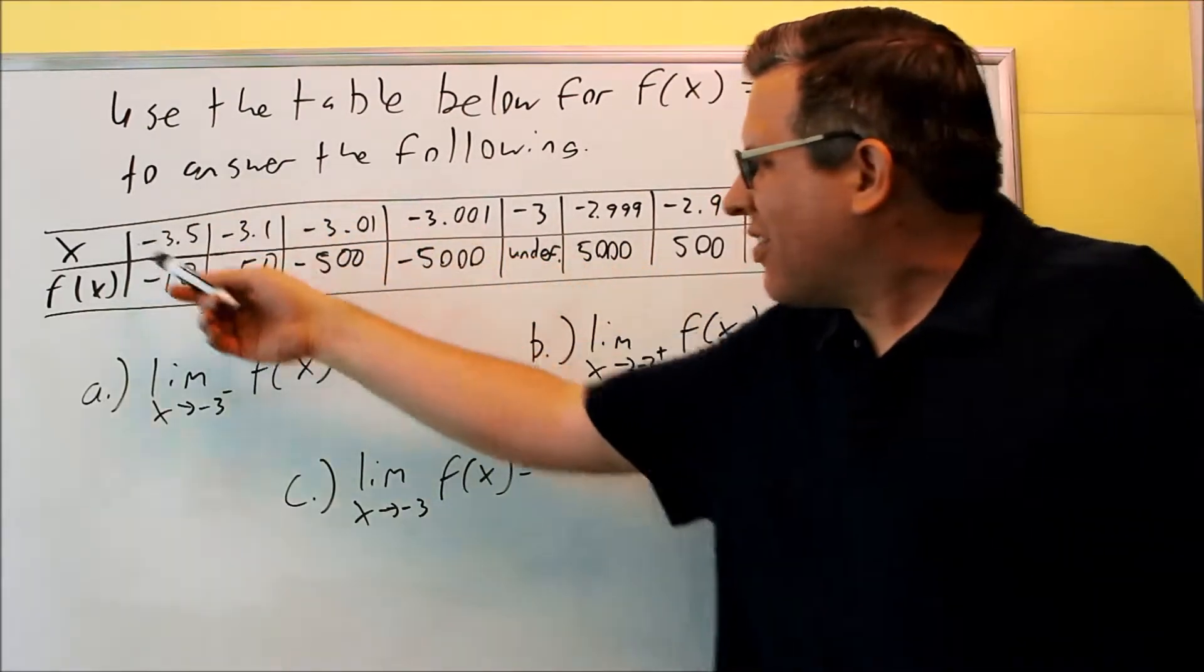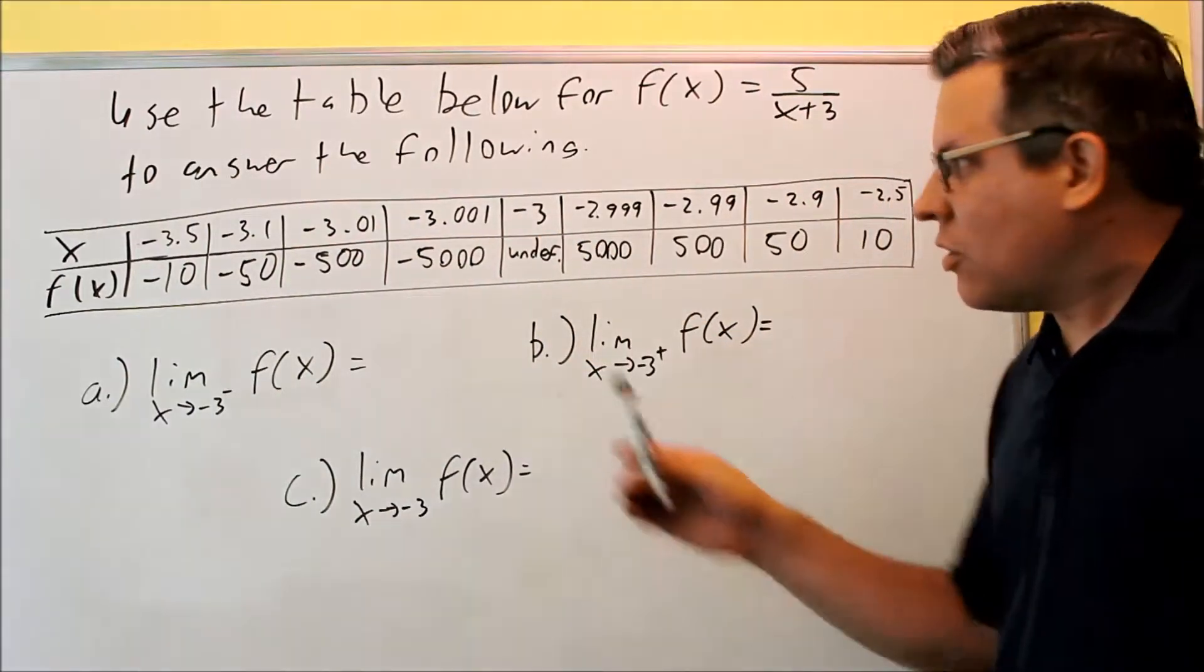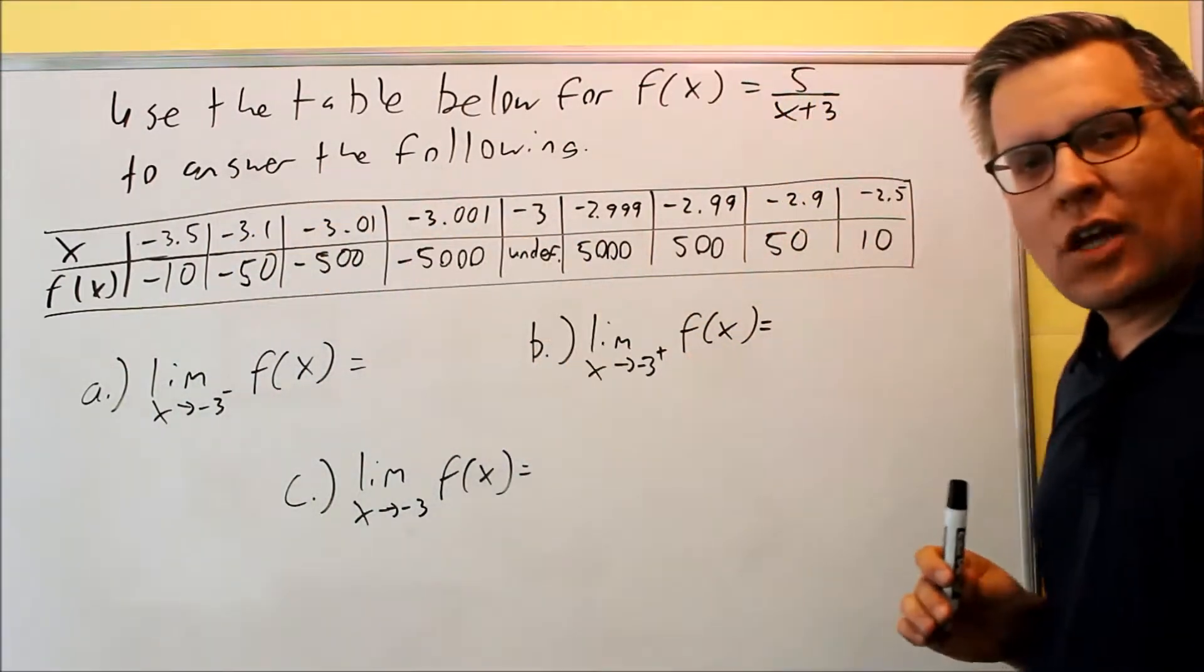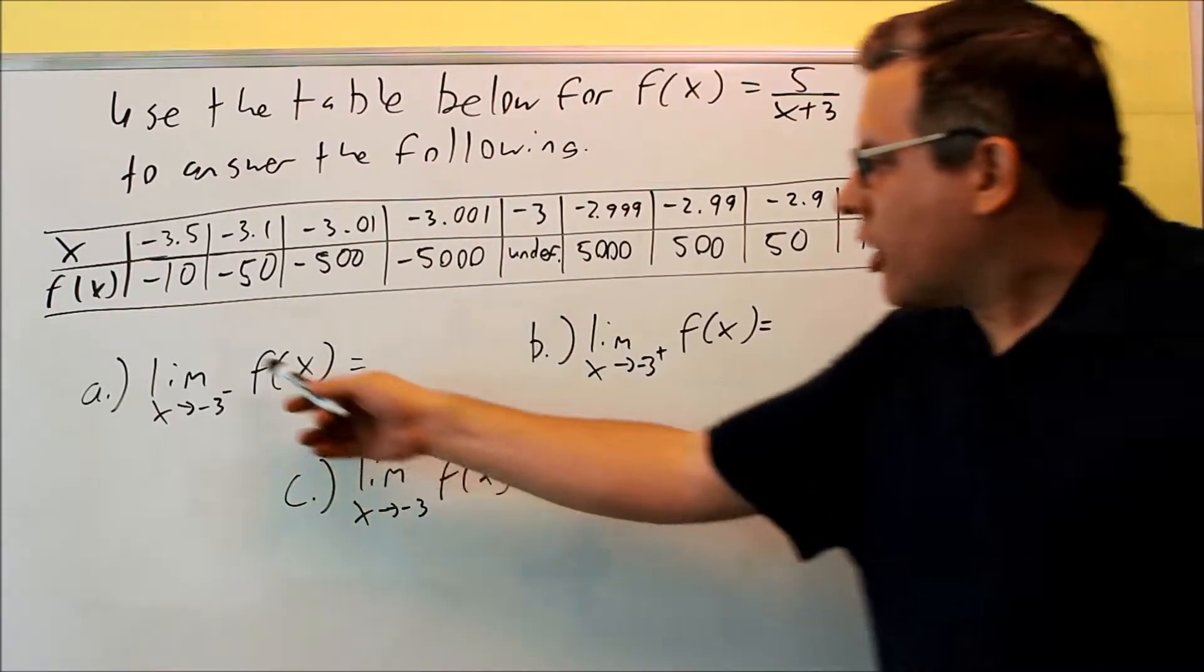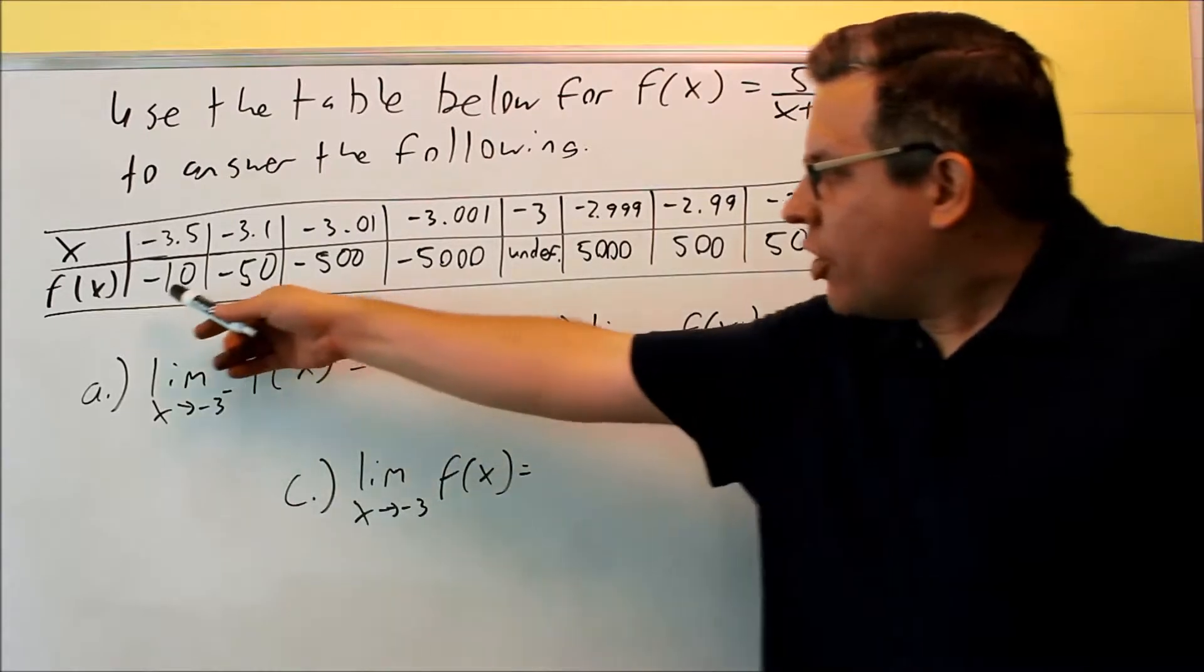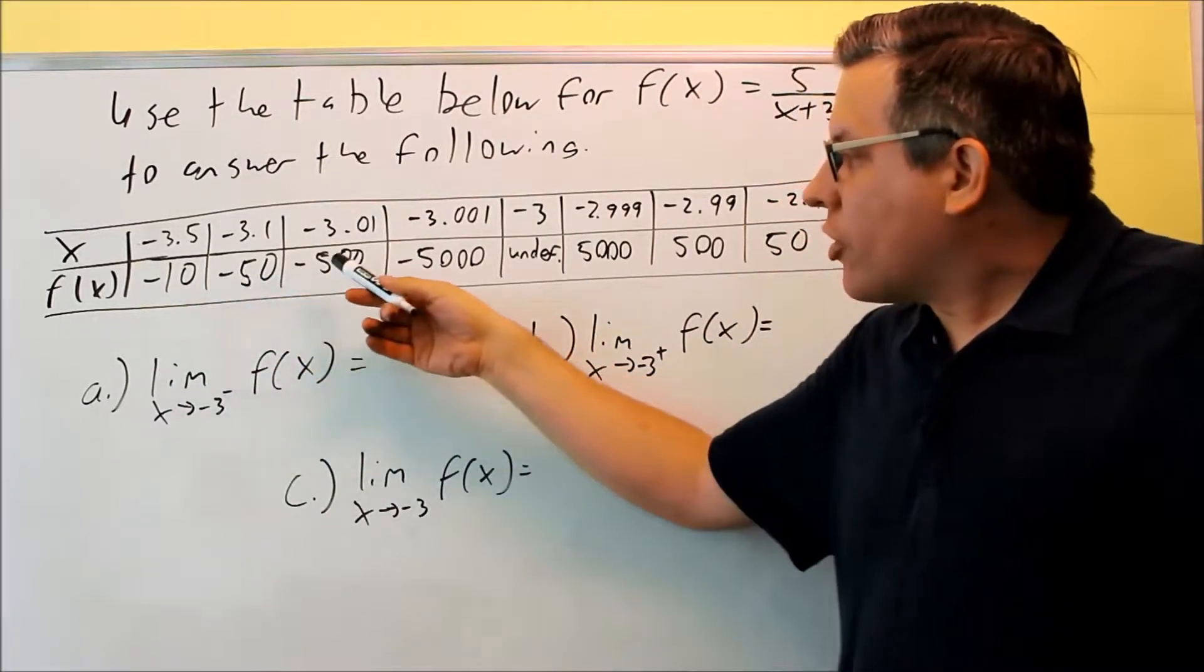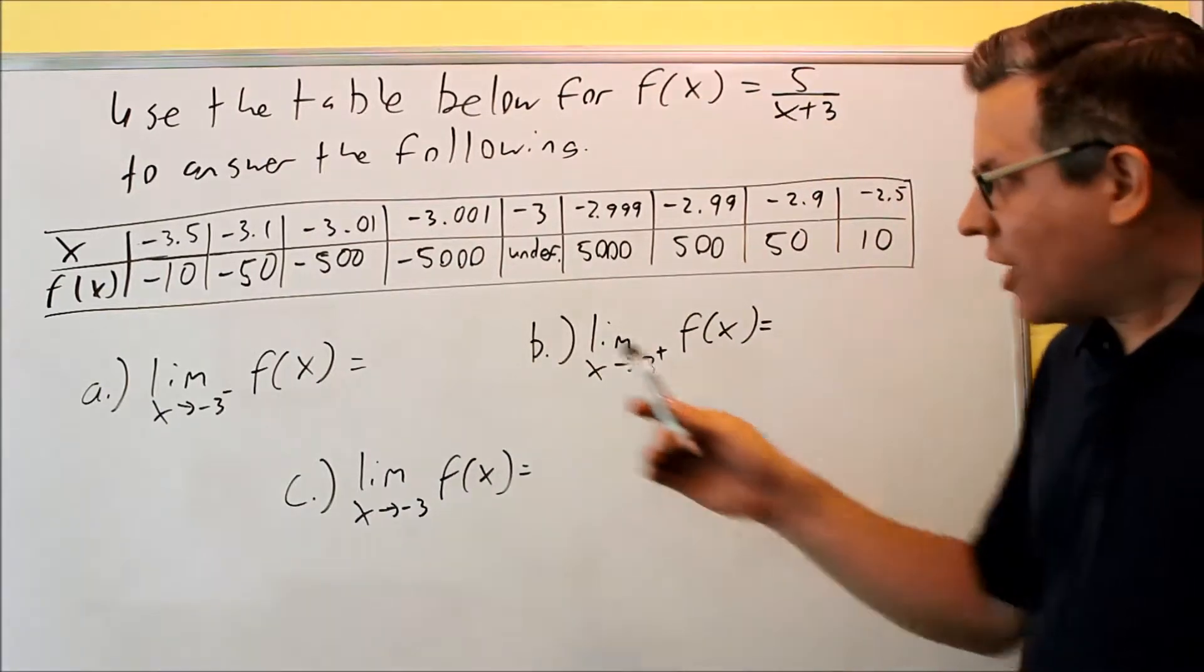Let's first look at this. We're going to look at the numbers to the left of negative 3. That means these are the numbers that are slightly less than negative 3. So we're looking at the limit as x approaches negative 3 from the negative side. We notice that these numbers are getting farther and farther away from 0.